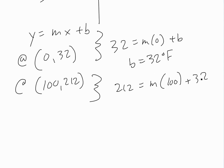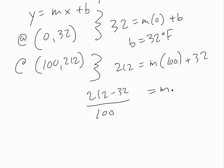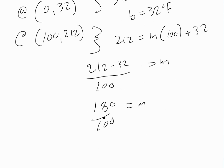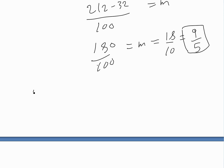Rearranging: m = (212 − 32) / 100 = 180 / 100. Simplifying by dividing by 10 gives 18/10, then dividing numerator and denominator by 2 gives m = 9/5. So y = (9/5)x + 32.